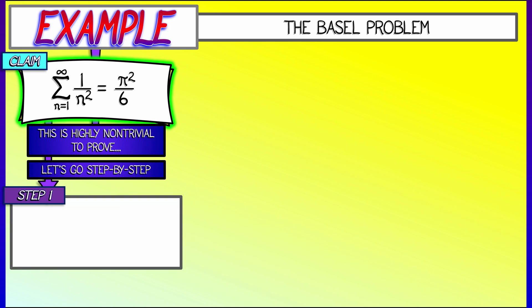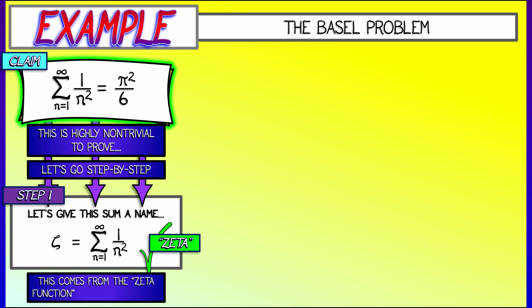Step one is in the naming of things. Let's give this sum a name. Let's call the sum, as n goes from 1 to infinity, of 1 over n squared, zeta. I'm going to use this. Wow, what a symbol. I love zetas. They're so neat. This terminology comes from the zeta function in number theory. And believe me, this story goes deep. But for now, it's just a name.